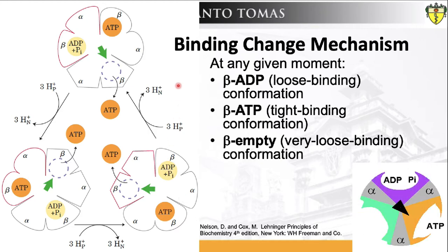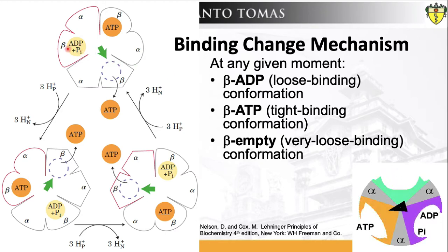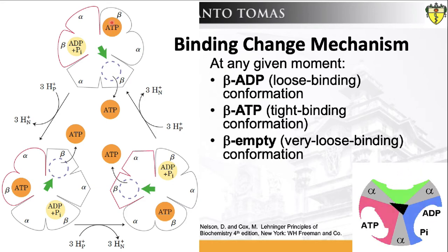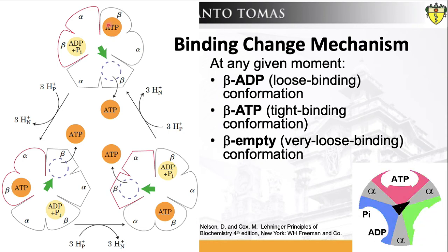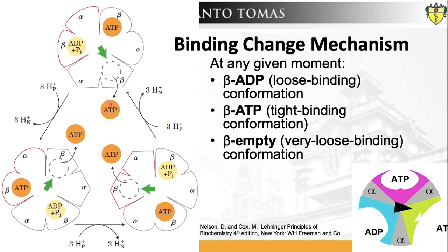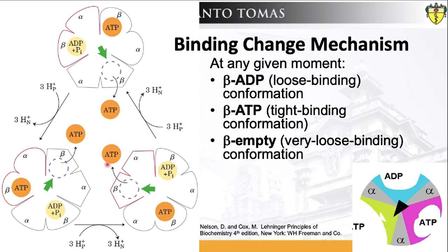The binding change mechanism is the key to rotational catalysis. A given beta subunit starts in the beta-ADP conformation, which binds ADP and inorganic phosphate from the surrounding medium. The subunit then changes conformation, assuming the beta-ATP form that tightly binds and stabilizes ATP, bringing about ready equilibration of ADP plus inorganic phosphate with ATP on the enzyme surface. Finally, the subunit changes to the beta-empty conformation, which has very low affinity for ATP, and the newly synthesized ATP leaves the enzyme surface. Another round of catalysis begins when this subunit again assumes the beta-ADP form.